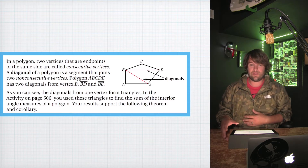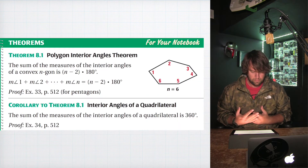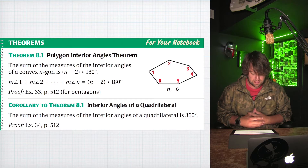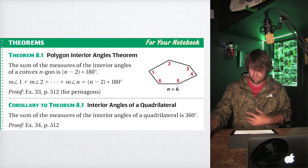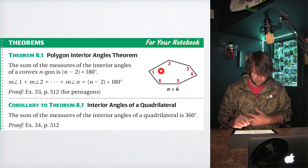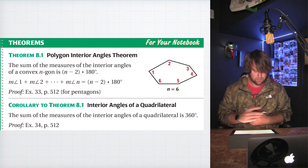Your results support the following theorem and corollary. Theorem 8.1 — Polygon Interior Angle Sum: the sum of the measures of the interior angles of a convex n-gon, where n is the number of sides, is (n − 2) × 180. So to find how many degrees total form the interior angles, it's the number of sides minus two, times 180.